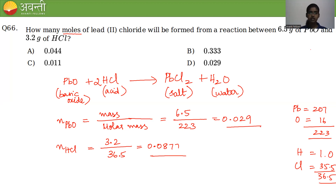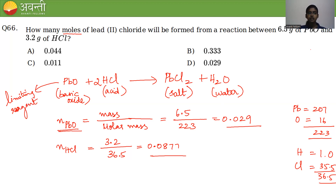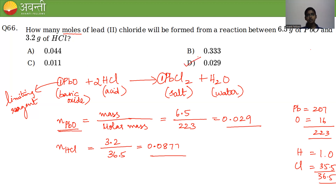Since PbO is present in the lesser amount, it is the limiting reagent. Since 1 mole of PbO gives 1 mole of PbCl₂, then 0.029 moles of PbO gives 0.029 moles of PbCl₂. Option D is the correct answer.